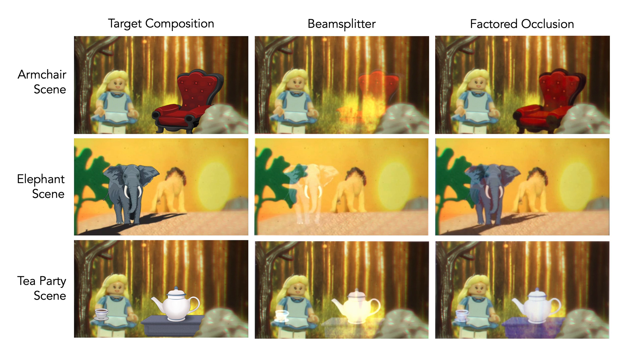And finally, rendering Alice a tea party set again shows significant improvement over the conventional. When the background is bright, light blockage is particularly important to prevent the ghostly looking digital content that you can see in the beamsplitter image.